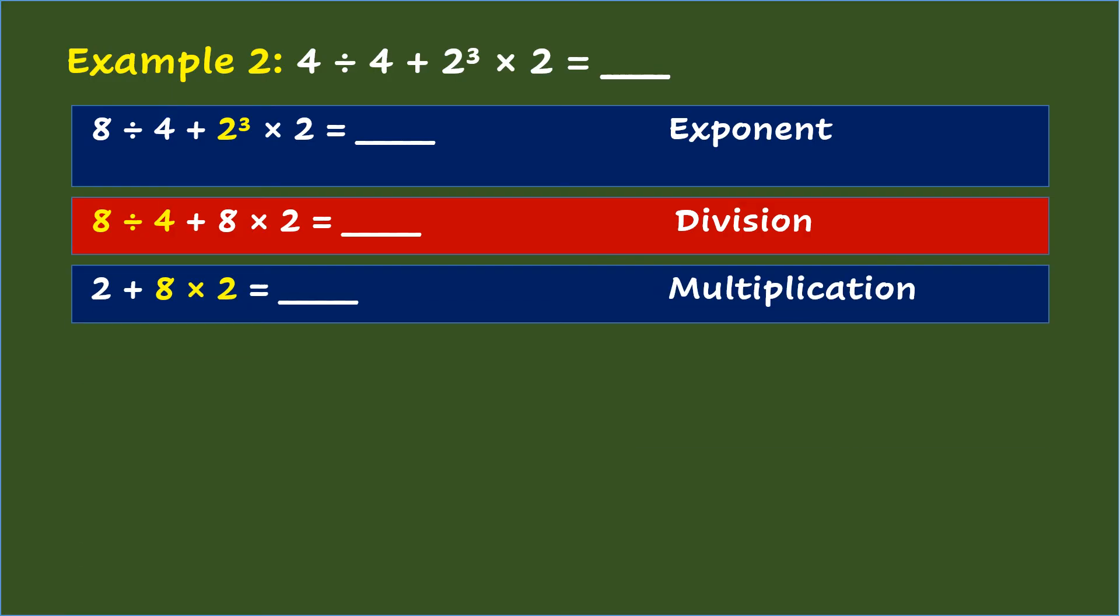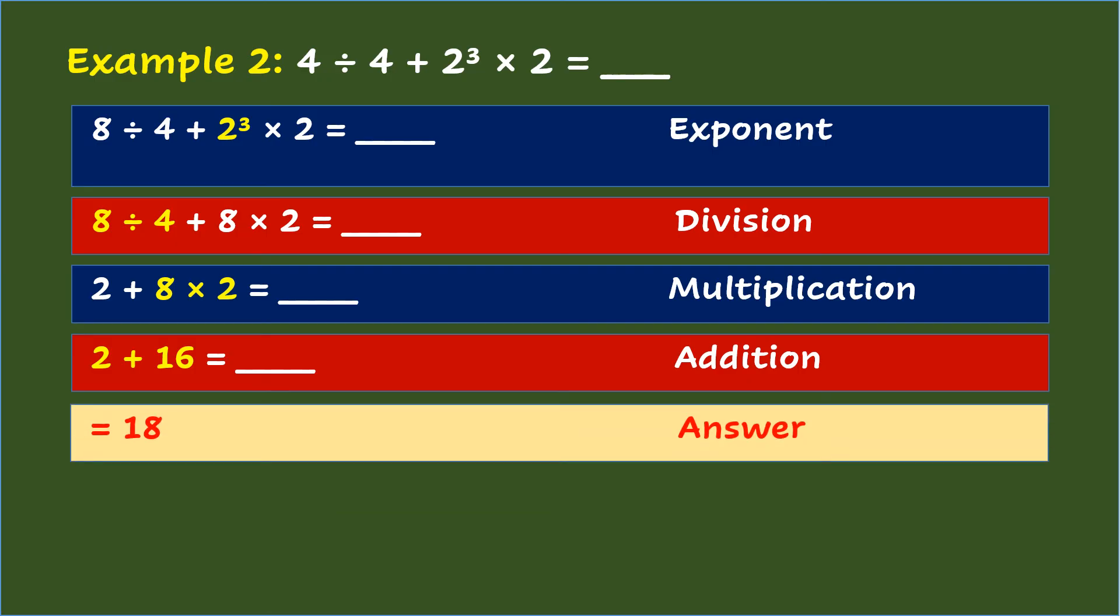Third is do the multiplication. So that's 8 times 2 equals 16. Fourth step is do the addition. So that's 2 plus 16 and the answer is 18.